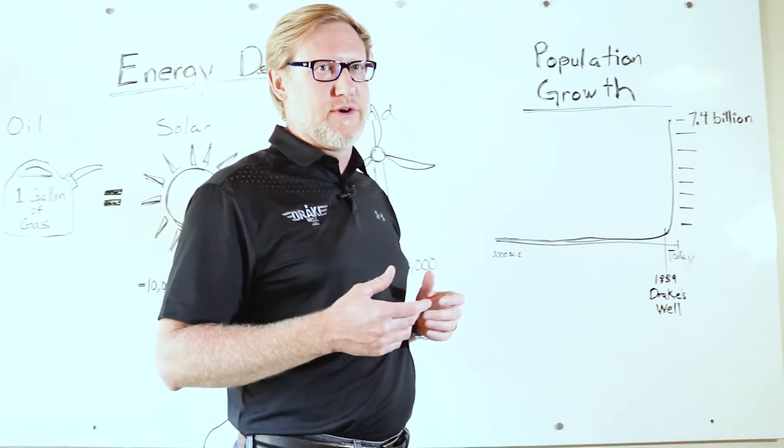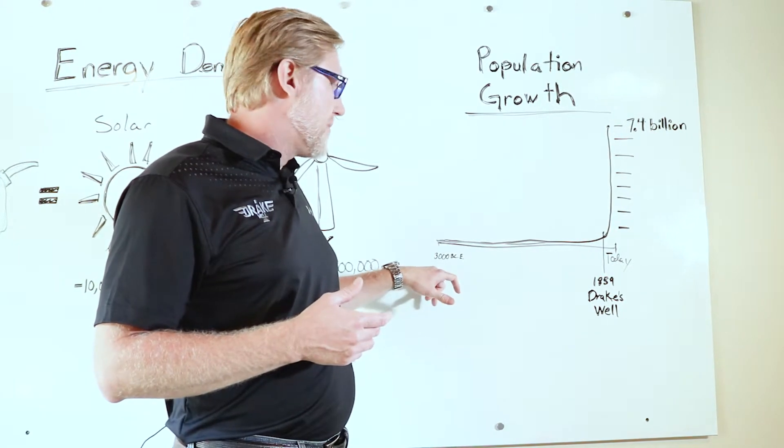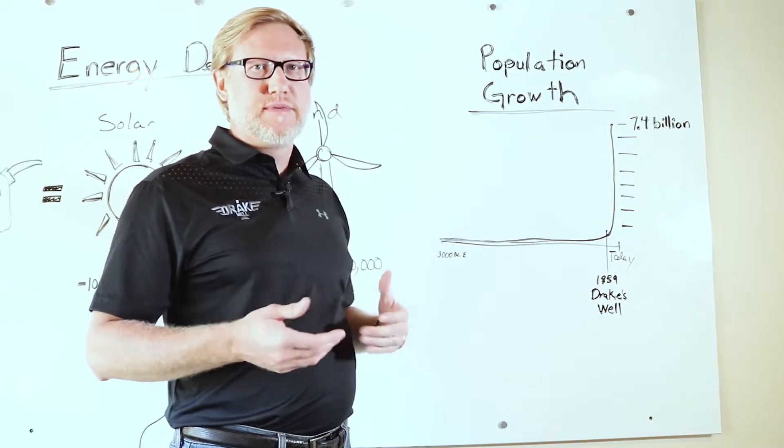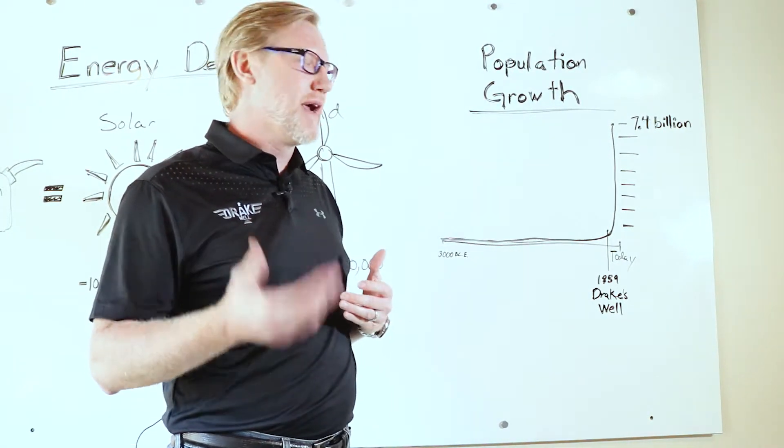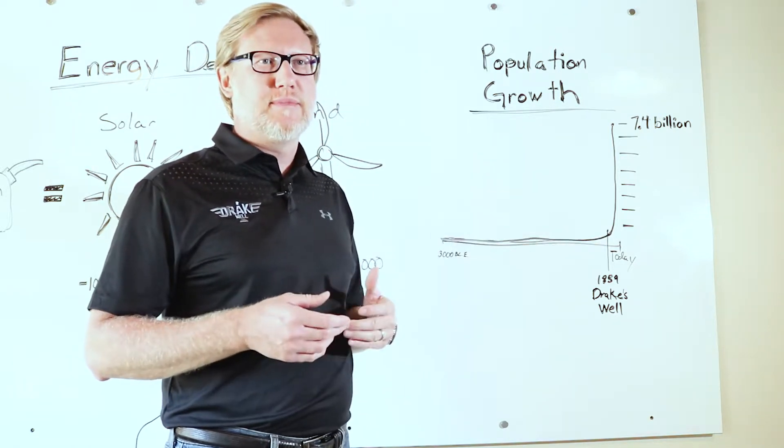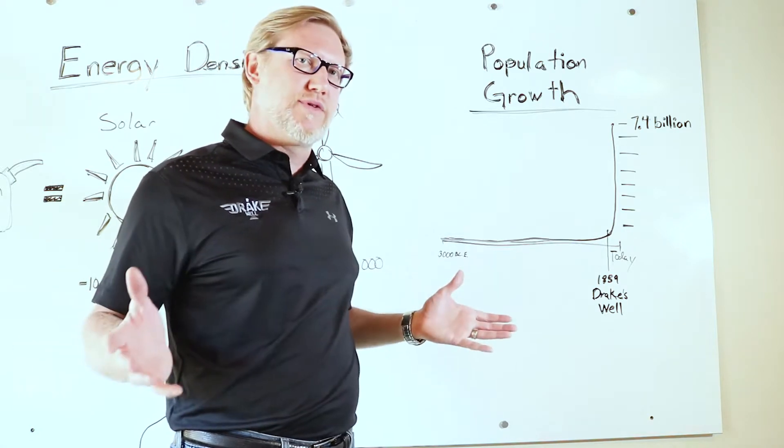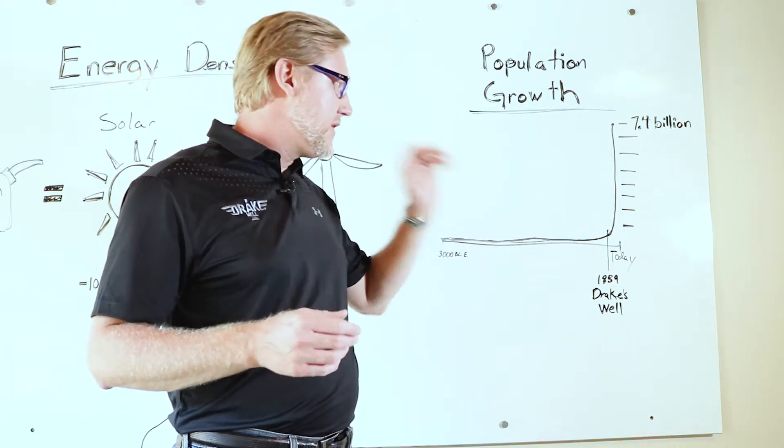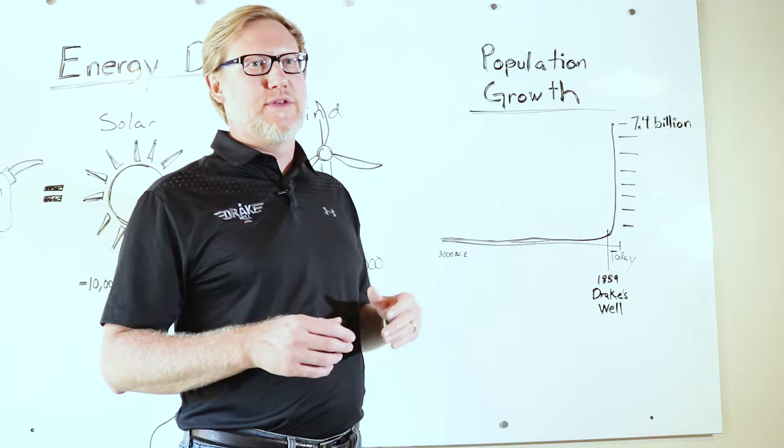Let's talk about the population growth. So from about 3000 BC or so, anything we can kind of guesstimate around in terms of population growth until about 1800, the population of the entire planet was under a billion people and usually hovering around 300 million or so.